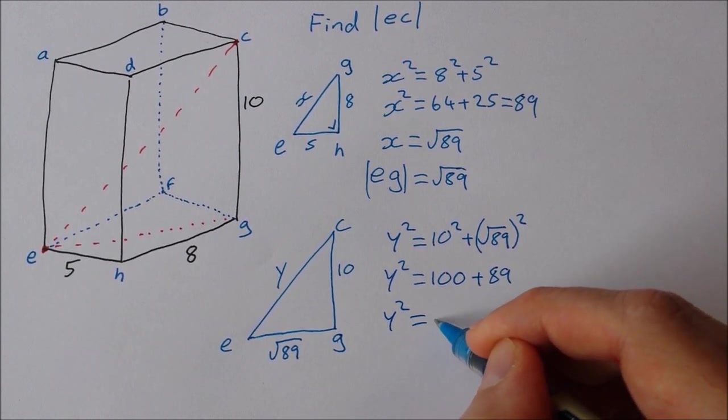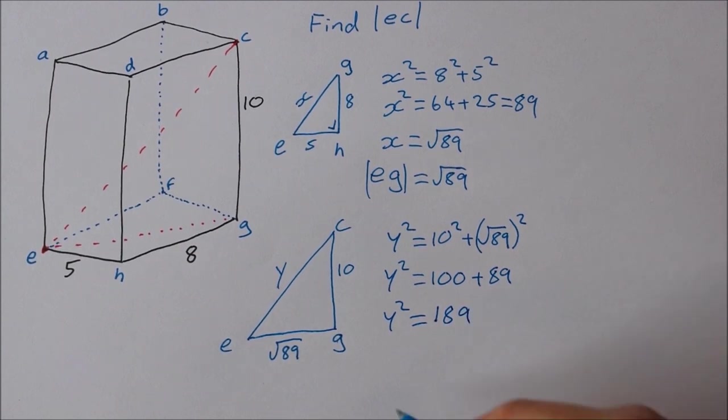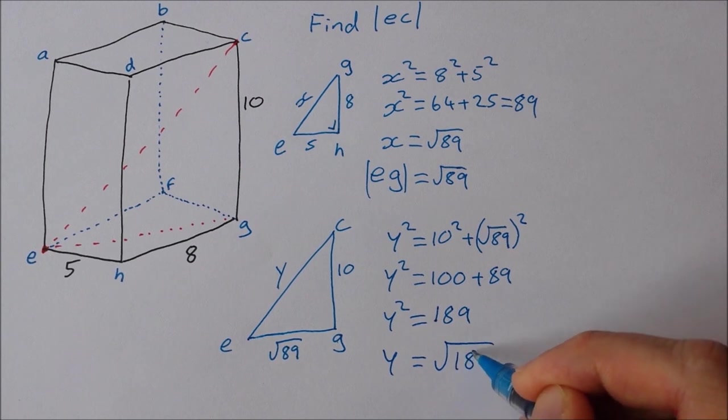So Y squared is equal to 189. That means Y is equal to the square root of 189.